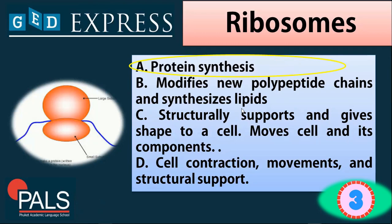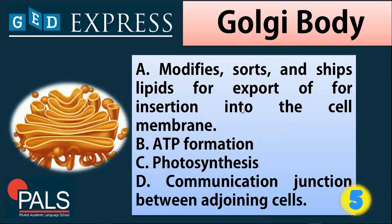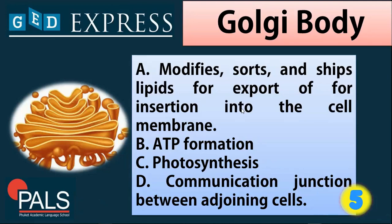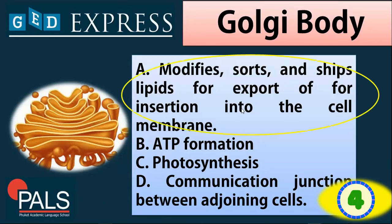Next we have Golgi body or Golgi apparatus. The function is — A. Modifies, sorts, and shapes lipids for insertion into the cell membrane, B. ATP formation, C. Photosynthesis, or D. Communication junction between adjoining cells. The answer is A — it is used to modify, sort, and shape lipids for export or for insertion into the cell membrane.